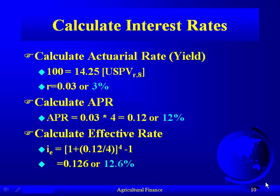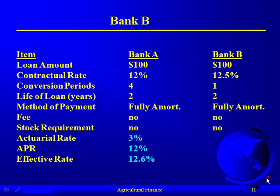So the effective rate or true interest rate on this loan isn't 12% as stated, because you're paying interest on the interest — it's actually 12.6%. We put our actuarial rate, APR, and effective rate onto our comparison chart, and now we move to Bank B.